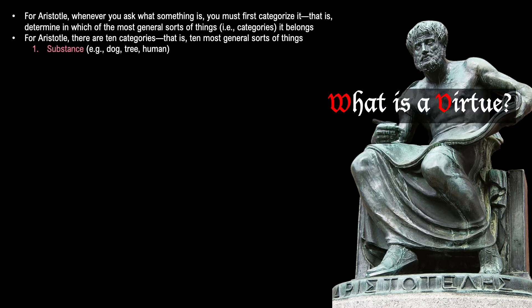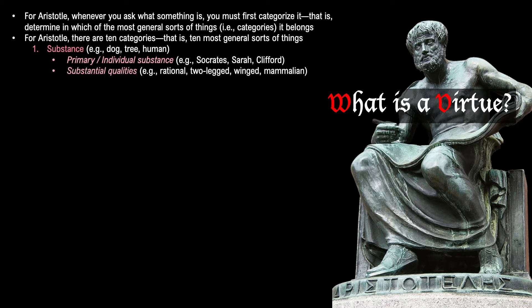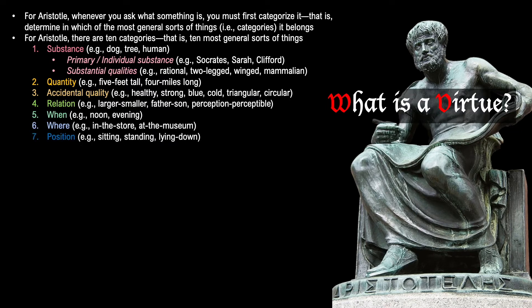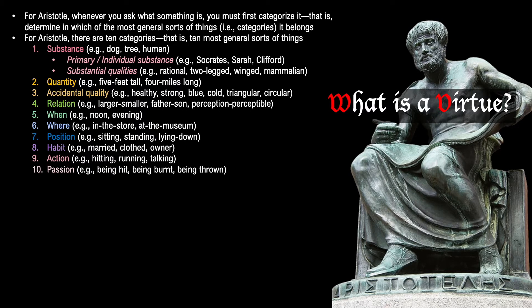The ten categories are: substance, which is subdivided into primary or individual substance and substantial quality; quantity; accidental quality; relation; when; where; position; habit; action; and passion. These are the ten most general sorts of things in which anything can be categorized according to Aristotle.